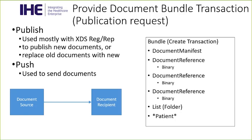Going back to the XDS environment: a document source publishes a document by creating this transaction and sending it to the document recipient. If the document recipient is grouped with an XDS environment, it converts the bundle — with document manifest and document reference — into an XDS provide-and-register transaction with a submission set, document entries, and the documents themselves. So there is a functional equivalent, even though there is a different encoding.